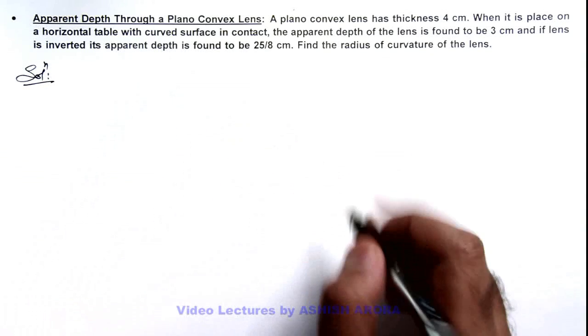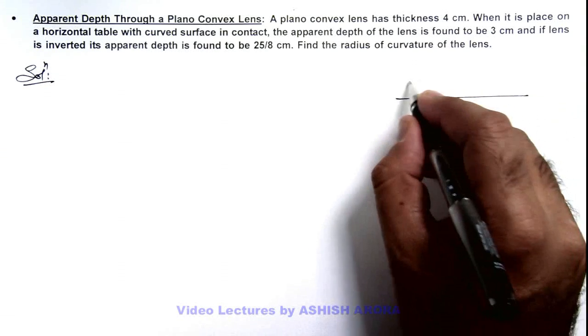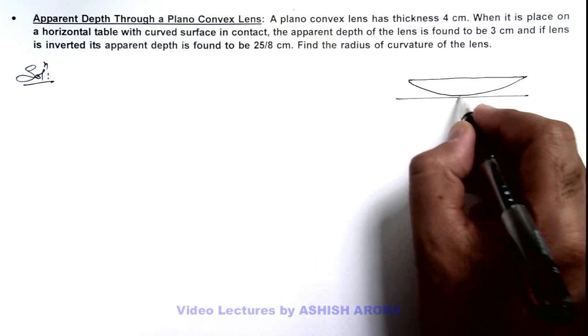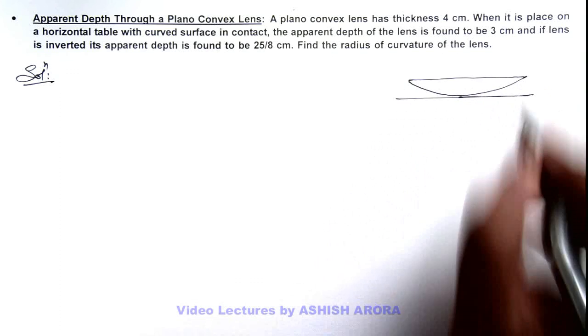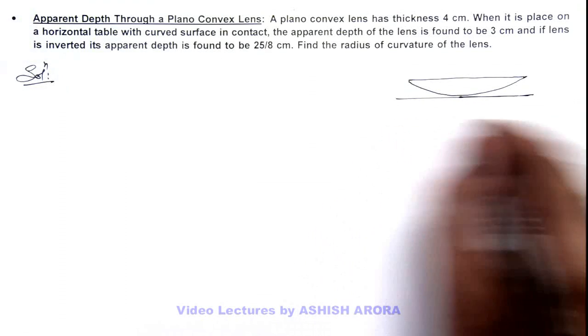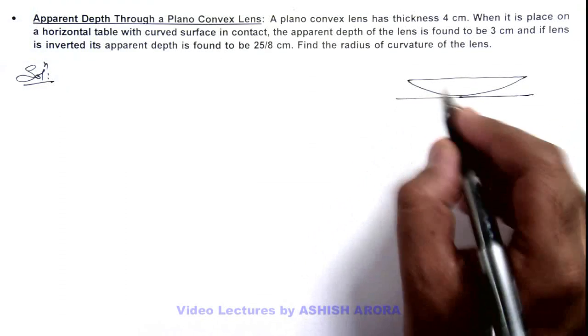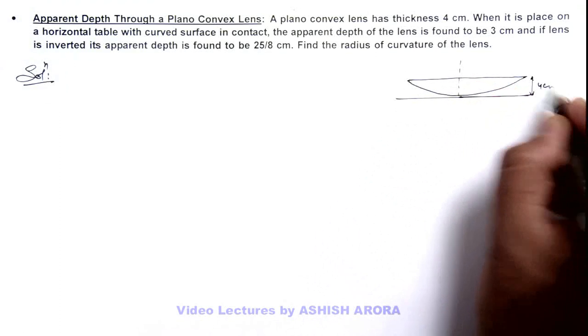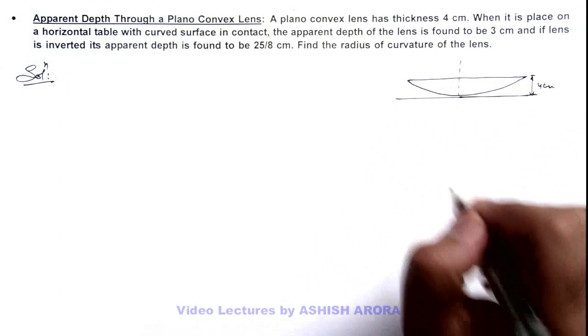In the initial stage, the plano convex lens is placed with the curved surface in contact with the surface at the bottom. On looking from the top, its actual width is 4 centimeters, but its apparent depth is found to be 3 centimeters.